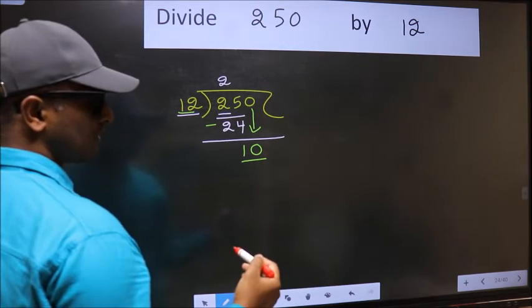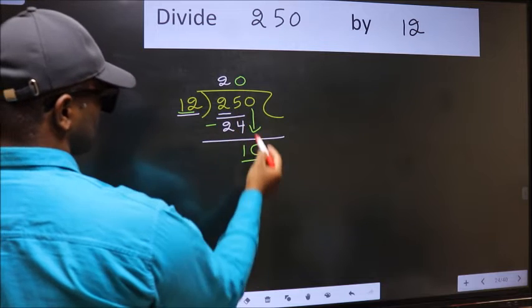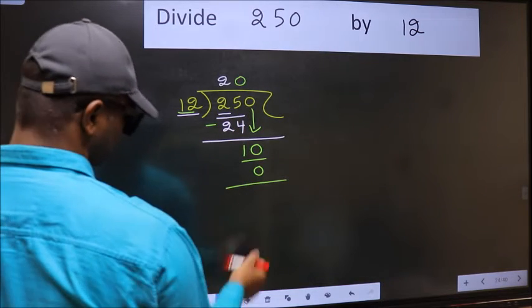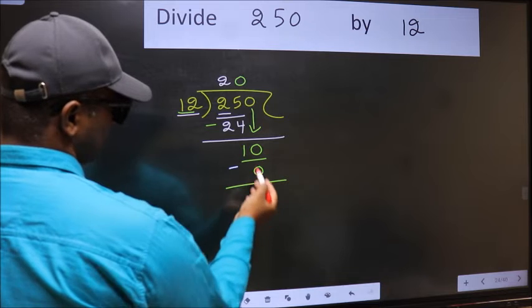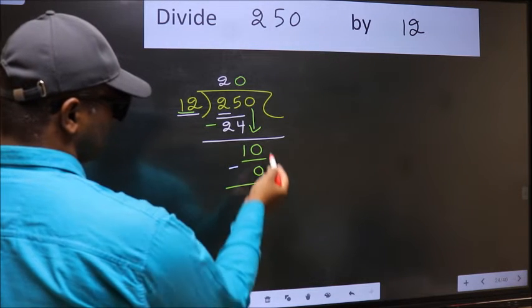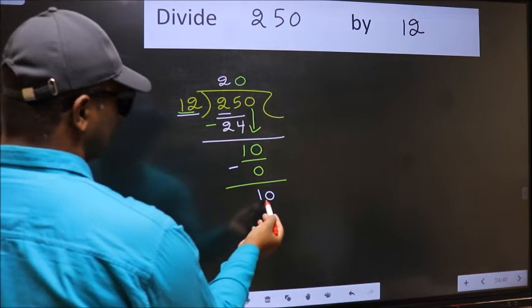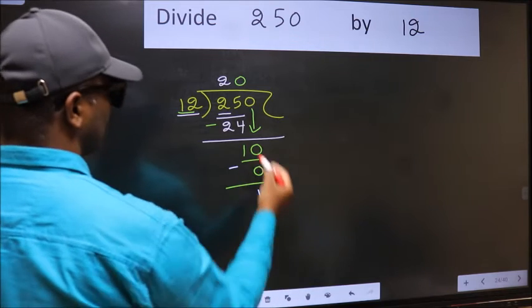So what we should do is we should take 0. So 12 into 0 is 0. Now you should subtract: 10 minus 0 equals 10. Over here we did not bring any number down, and 10 is smaller than 12, so now...